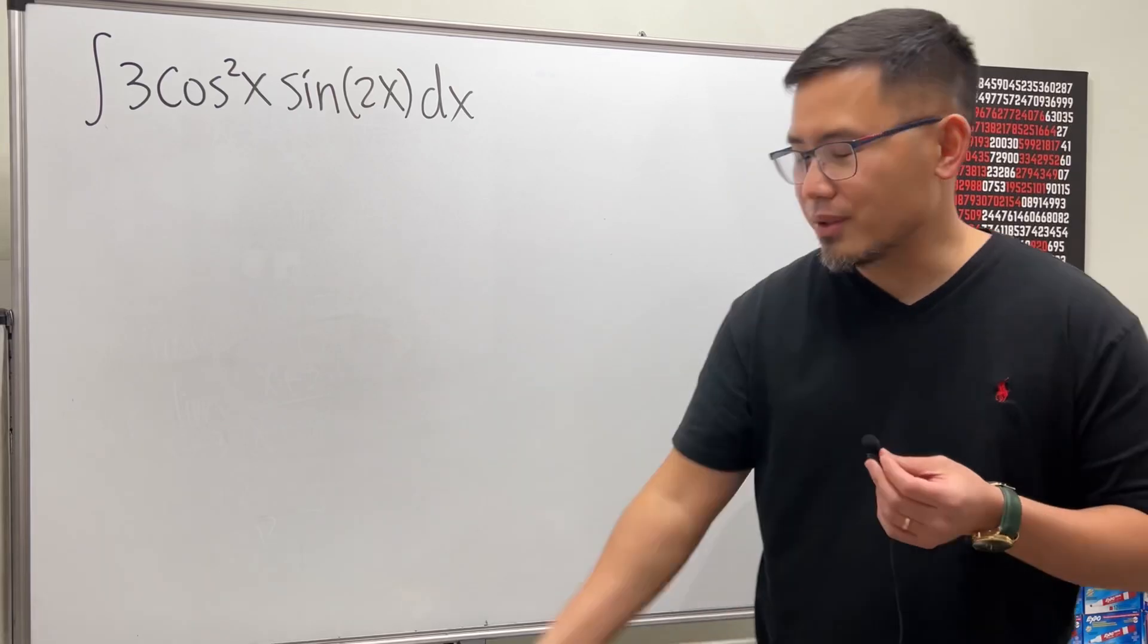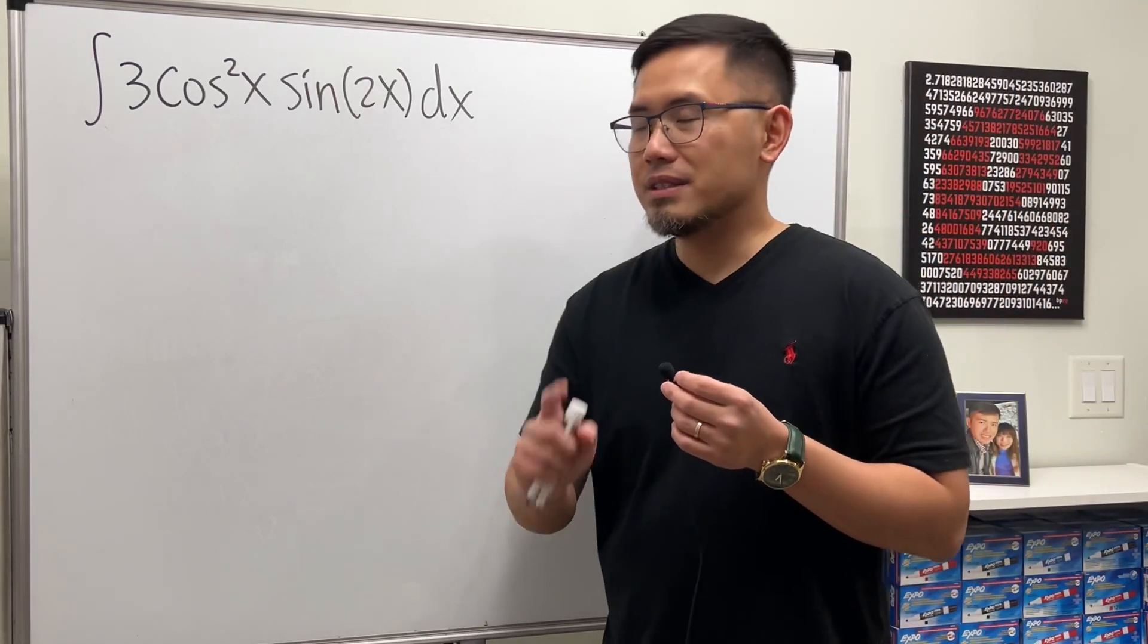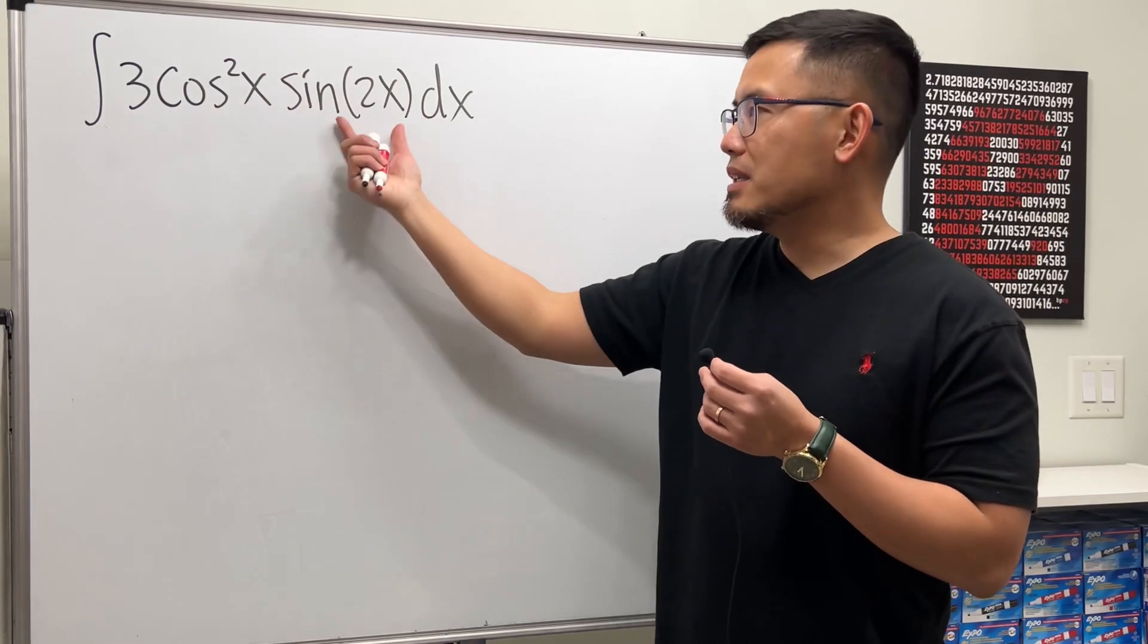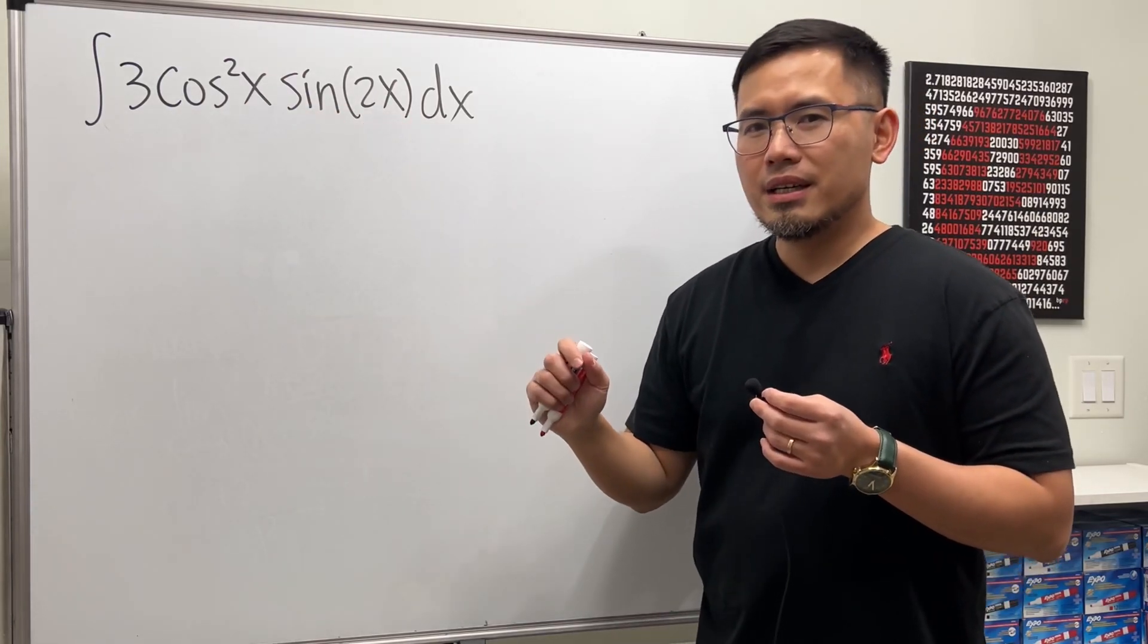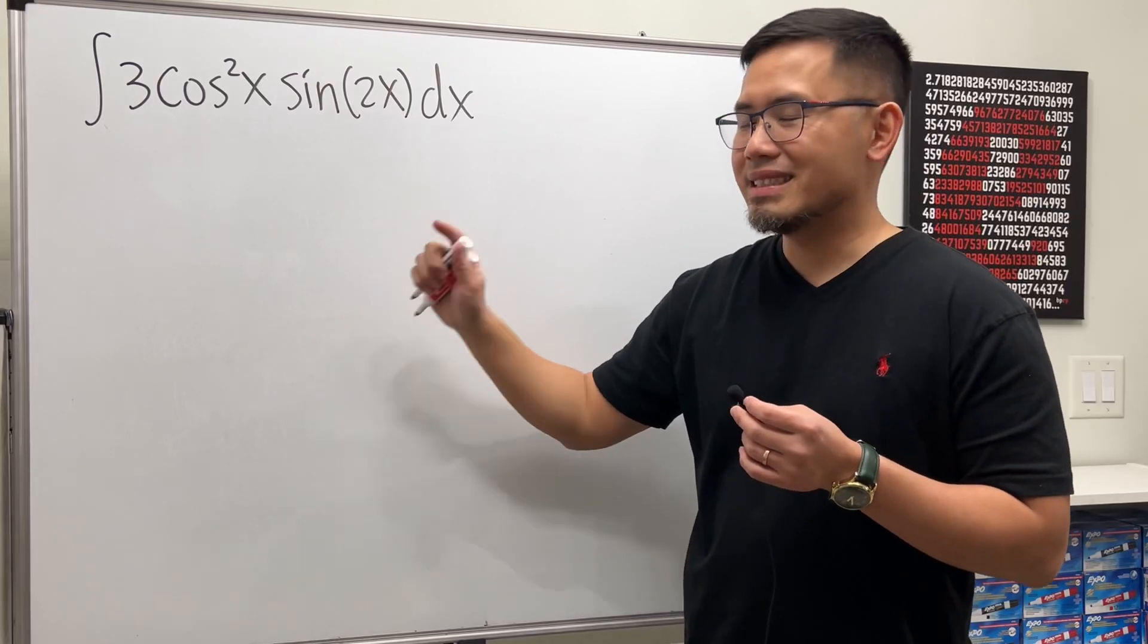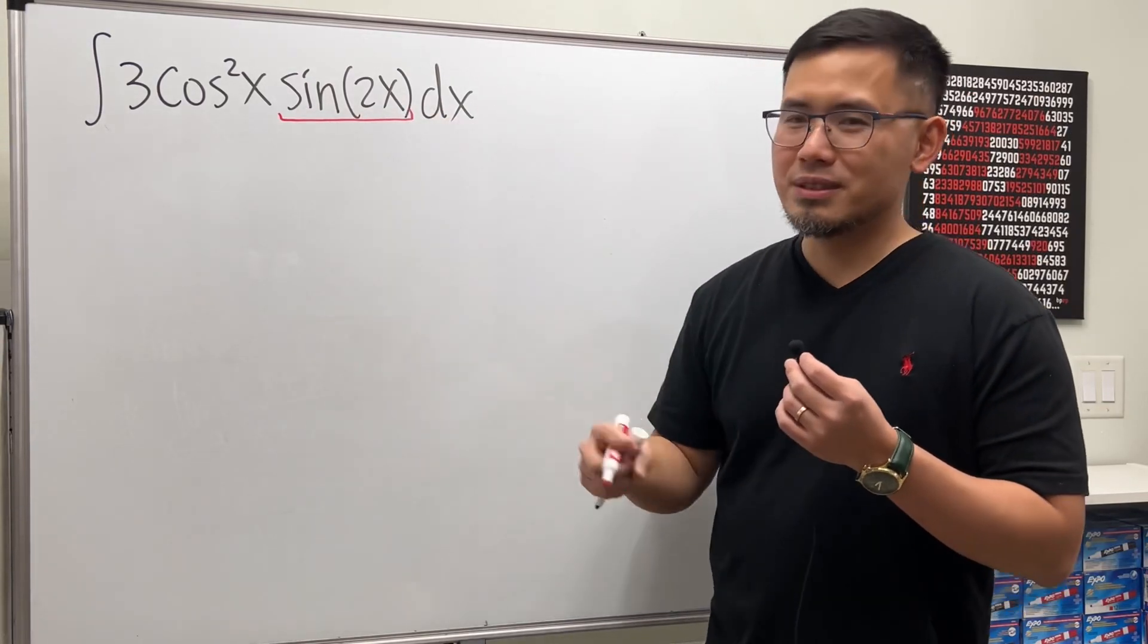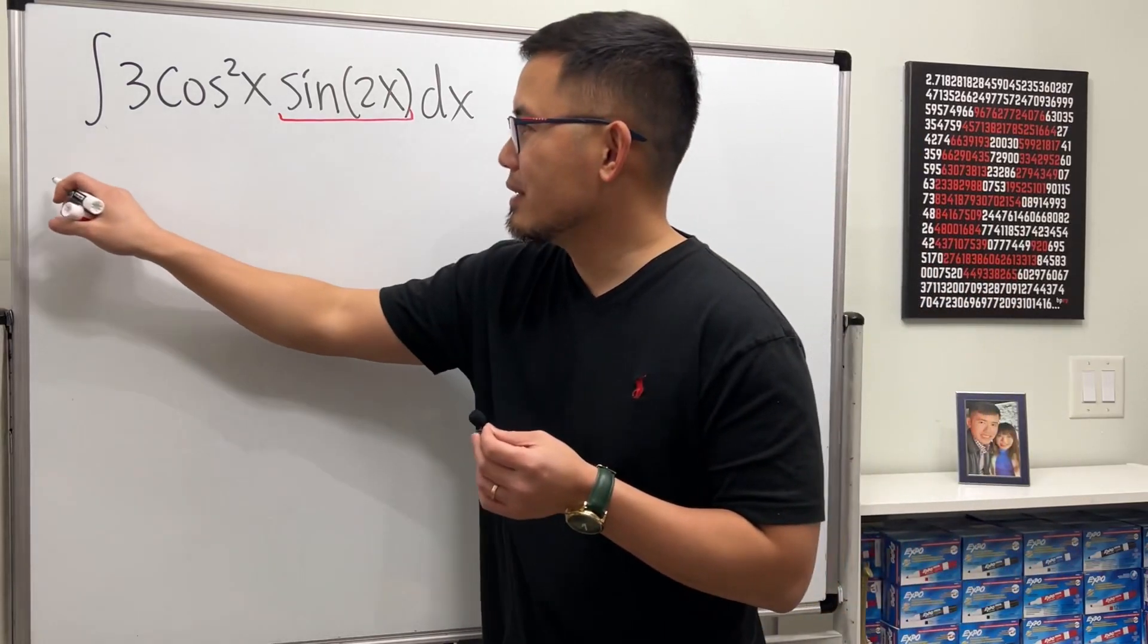So let's have a look. Firstly, you broke down cosine squared x, but here we have sine of 2x. I know either way works, but the intended solution is this way. We are going to break down sine of 2x by using the double angle identity.